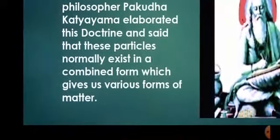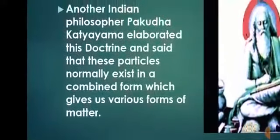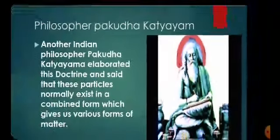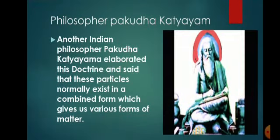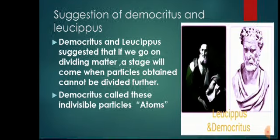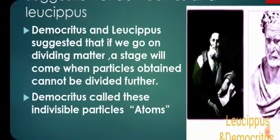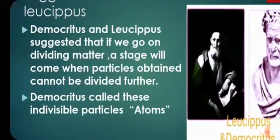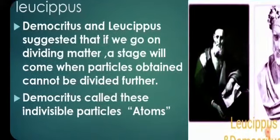Katyayan elaborated this doctrine and said that these particles normally exist in a combined form which gives us various forms of matter. All these small particles combine together and convert into a larger form — these are the matters and they are forming matter. Then came the suggestion of Democritus and Leucippus, two scientists who were Greek philosophers, not Indian.